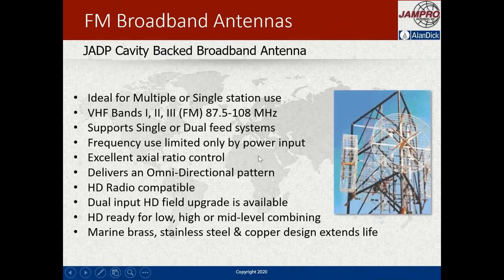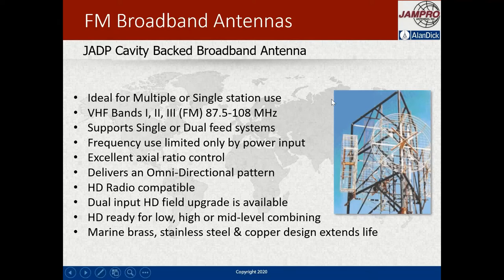On the side mount side we have the JSWB — a broadband, high-power side mount — and the JCPB at slightly lower power, both circularly polarized. We also have linearly polarized options like the JBVP (vertical dipoles) and the log periodic antenna which is very directional. The JADP cavity-backed antenna has a big reflector with sides — it's called a cavity because of those sides — making it comparatively large but with very good performance, and it's used for FM radio as well as TV bands one and three.